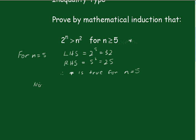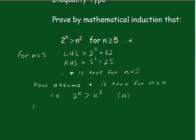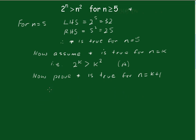Now we'll assume the statement is true for n equals k, that is, 2 to the k is greater than k squared. Now prove the statement is true for n equals k plus 1, that is, 2 to the k plus 1 is greater than k plus 1, all squared.